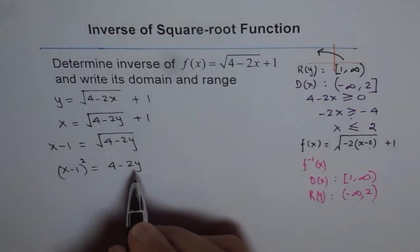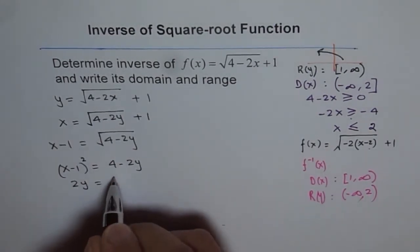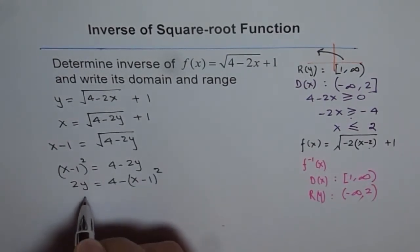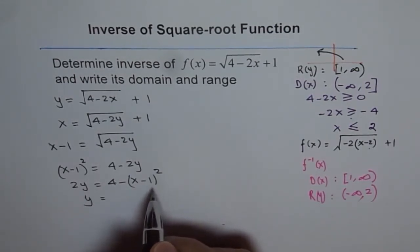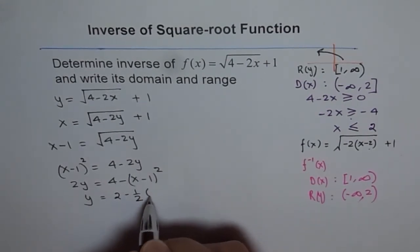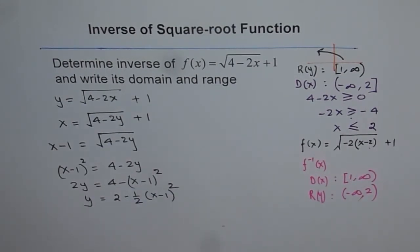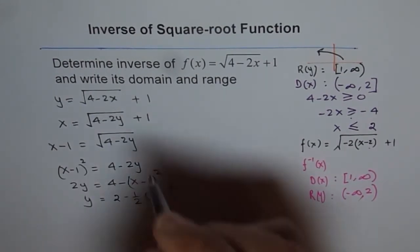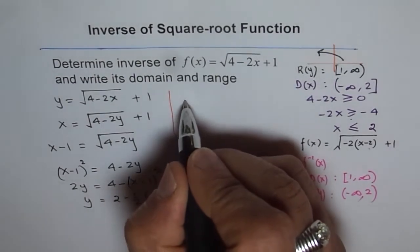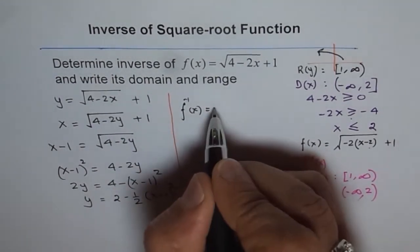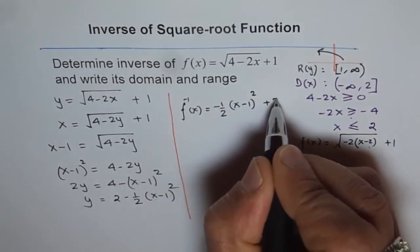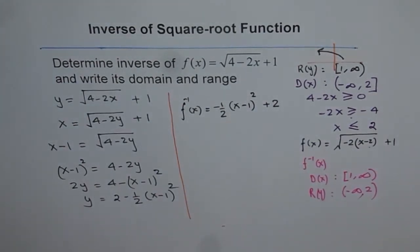To solve for y, we get 2y equals 4 minus (x minus 1) squared, or y equals 2 minus one-half times (x minus 1) squared. So the inverse function is f inverse of x equals minus one-half times (x minus 1) squared plus 2. That is the standard way to write the quadratic function.